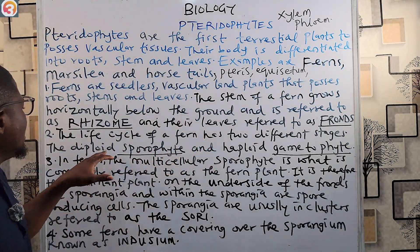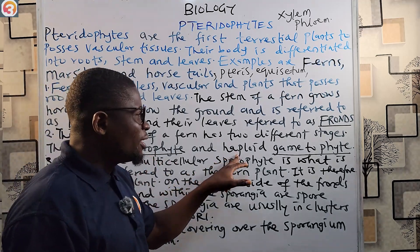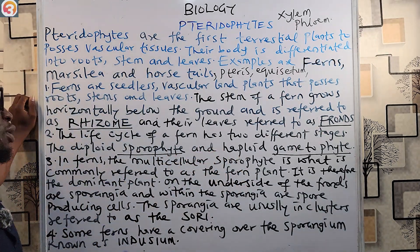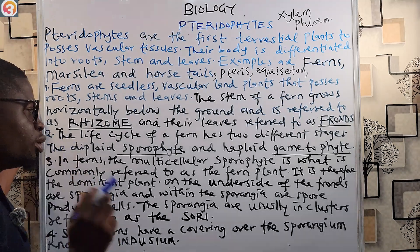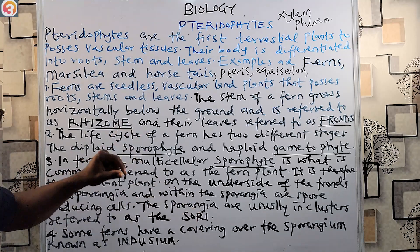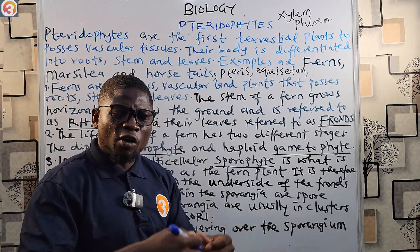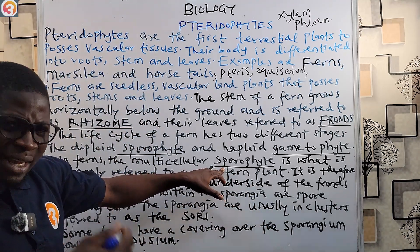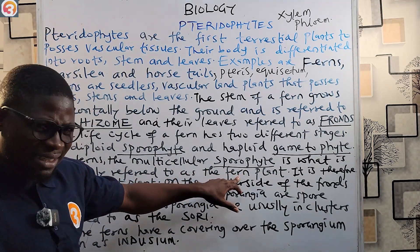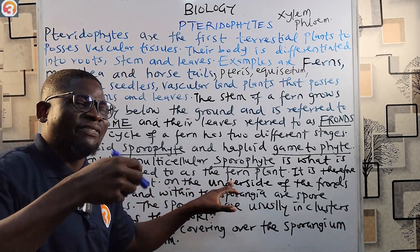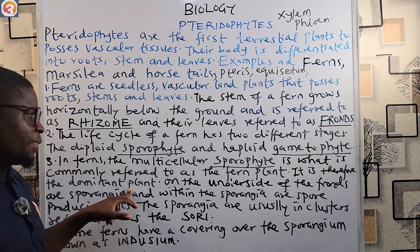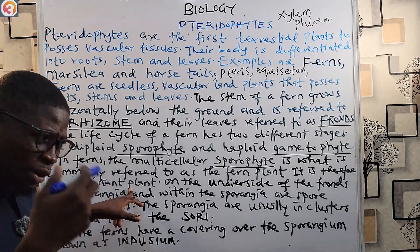The life cycle of a fern has the diploid sporophyte that produces spores, and the haploid gametophyte that produces gametes. The multicellular sporophyte is commonly referred to as the fern plant itself - it is the most dominant phase of a fern's life cycle. This is confirmed by past exam questions where this concept has been tested.